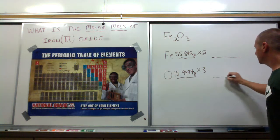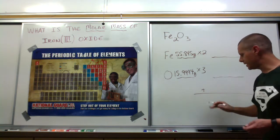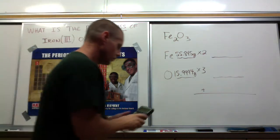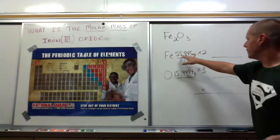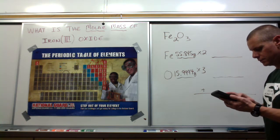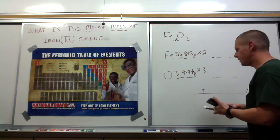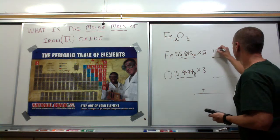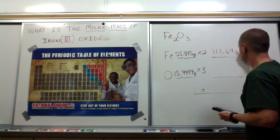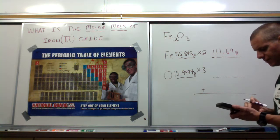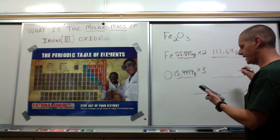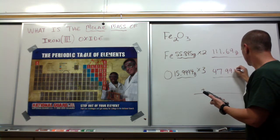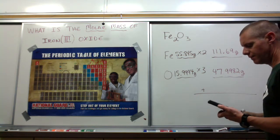We need to multiply these out and add them up and write it as an equivalent statement. 55.845 times 2 is 111.69 grams. 3 oxygens, that is 15.9994 times 3 is 47.9982. We add these up, we will have the molar mass.